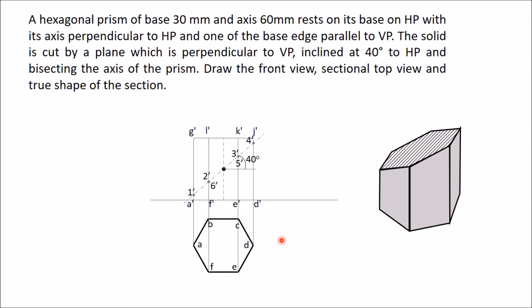Now project all these points in top view. You can see that this entire portion is cut and removed. So 1 is coming at this position, 2 at this edge 2F, at the same position. You are getting similarly 3, 4, 5, and 6. Now this entire part is cut, therefore you have to show the section. This is the sectional top view.